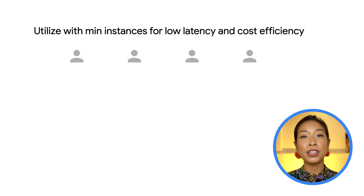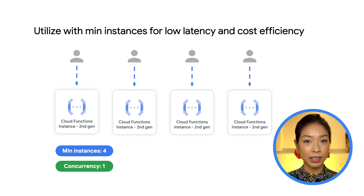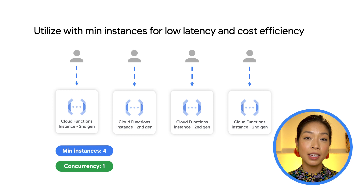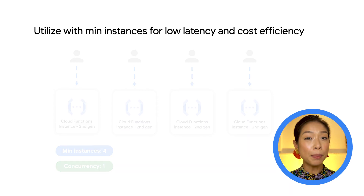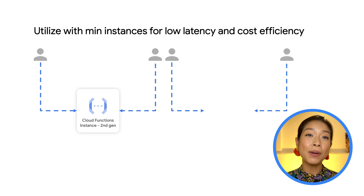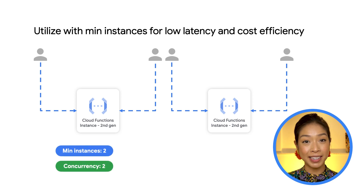This brings up a useful pattern: combining concurrency with minimum instances. In both first and second generation, you can define a minimum number of warm instances always ready to handle requests, allowing for lower latency responses without cold start penalties. Paired with concurrency, because a function instance can handle more than one request at a time, you can reduce the number of min instances needed while still serving a certain volume of requests with lower latency.